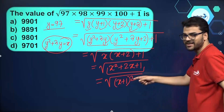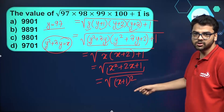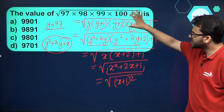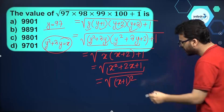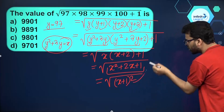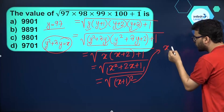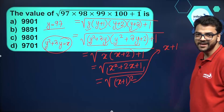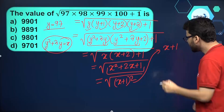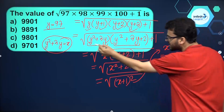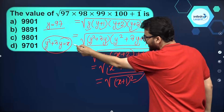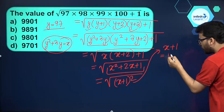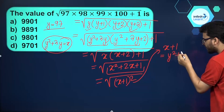Using the identity, x² + 2x + 1 = (x+1)², so this becomes √((x+1)²). Now, the square root of (x+1)² is simply x+1, since the numbers are positive — we don't need to worry about modulus. In place of x we put y² + 3y.